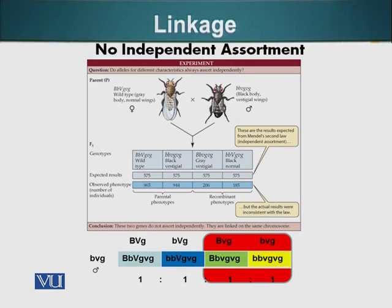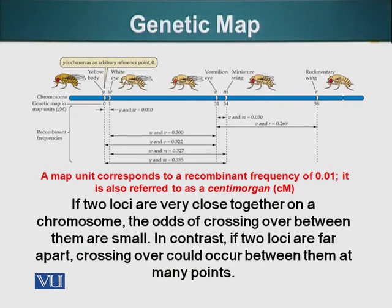So if we wanted to calculate what is the frequency, it is a simple formula. Let's look at that. We basically add the number of recombinants and divide it by the total number of offsprings. And that gives us recombination frequency.